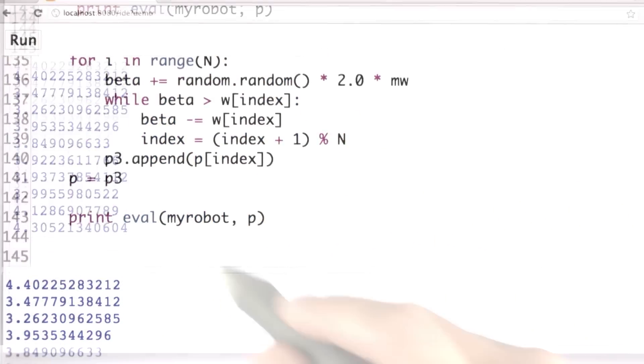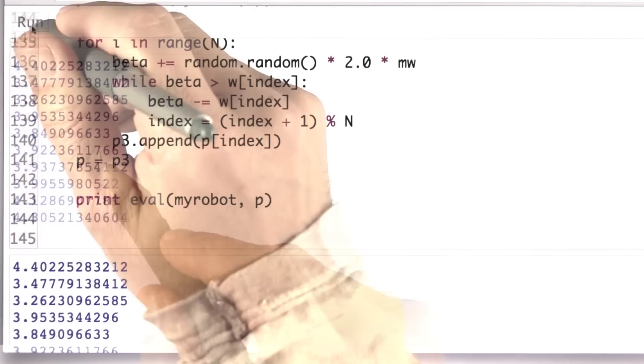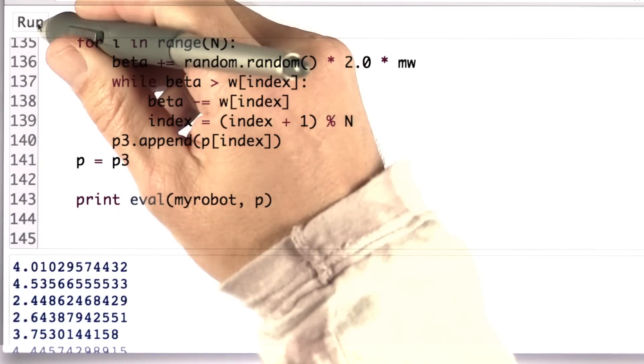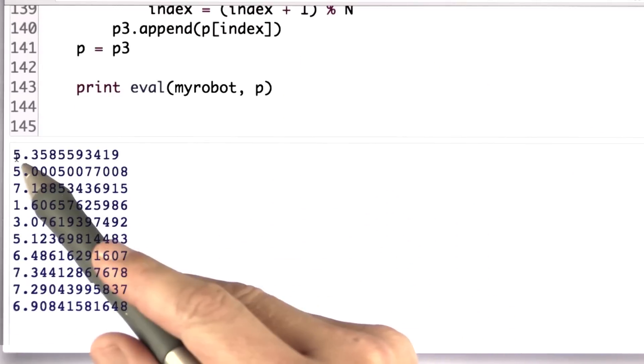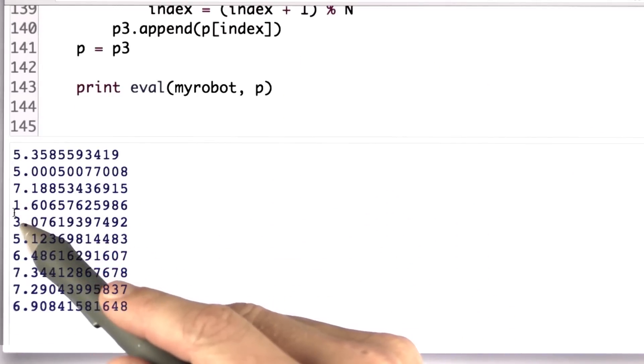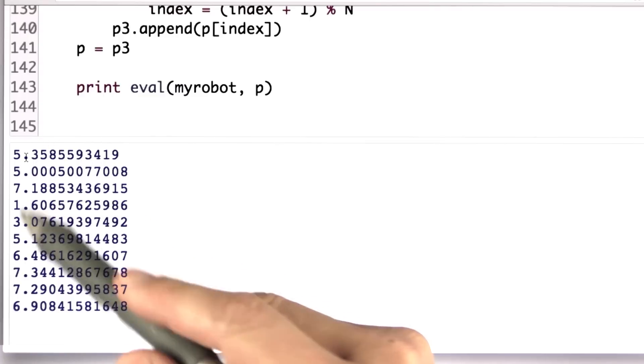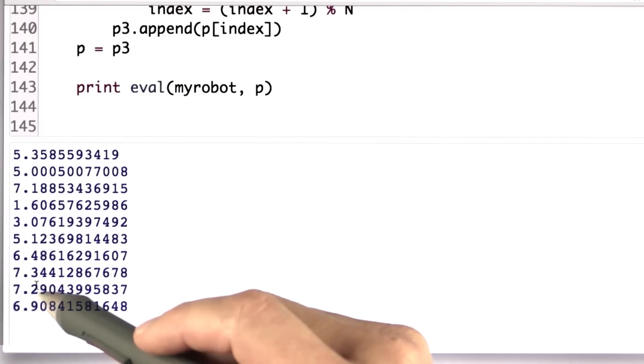Here's a second one. These are small values again. Another one. Another one. Here's one that's interesting. You can look at these errors: 5, 5, 7, 1, 3, 5, 6, 7, 7, 6. It's a good run. The error is down to 6 compared to whatever it would be if we didn't do particle filters and had a random set of particles.